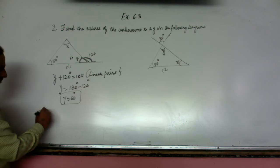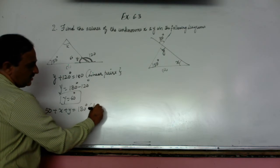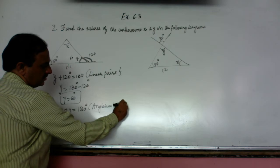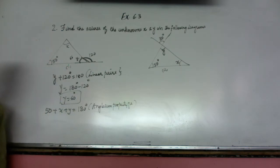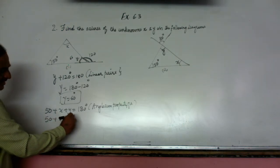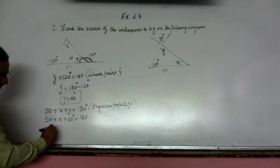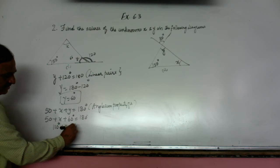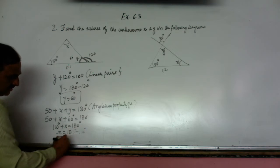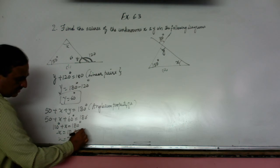In a triangle 50 plus x plus y is equal to 180 degree. 50 plus x plus 60 is equal to 180 degree because we got the value of y as 60 degree. So 110 plus x is equal to 180 degree. X is equal to 180 minus 110. So the value of x is 70.